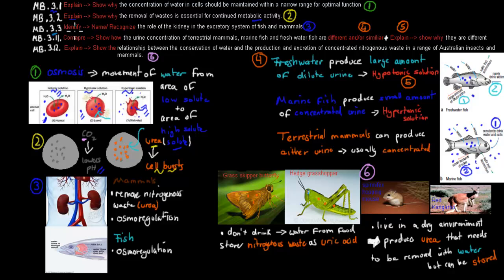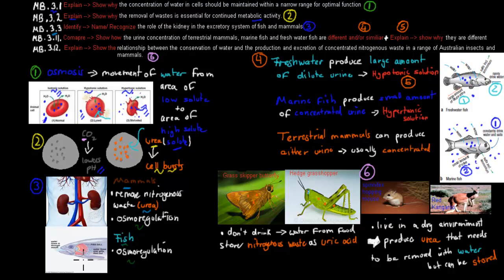The next one is 3.3. It says 'identify' — meaning name and recognize — the role of the kidney in the excretory system of fish and mammals. Both fish and mammals have a kidney, but with different roles. In mammals, it removes nitrogenous waste in the form of urea and also does osmoregulation, regulating the amount of water and salt. Whereas fish only does osmoregulation, regulating water and salt levels, because ammonia can be removed through the gills, so the kidney doesn't handle nitrogenous waste.